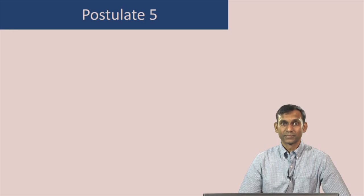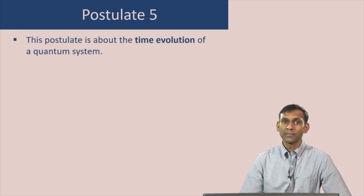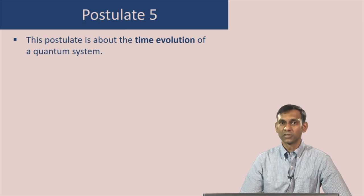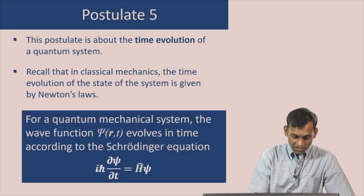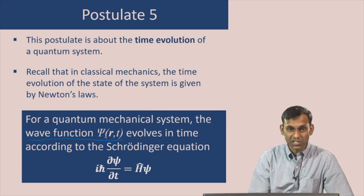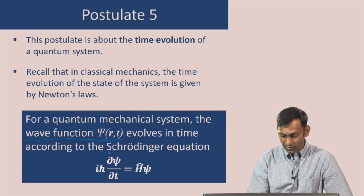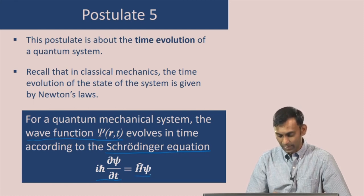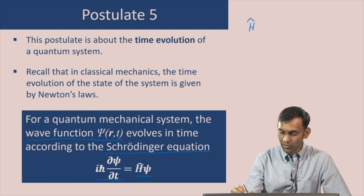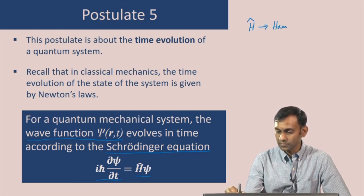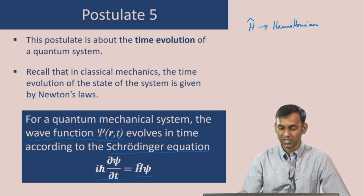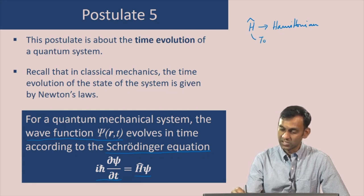Let us now look at postulate 5. This postulate tells us about the time evolution of a quantum system. Recall that in classical mechanics, the time evolution of the position and momentum of a particle was given by Newton's laws. In quantum mechanics, the time evolution of the wave function — which is a function of position and time — is given by the Schrödinger equation: i ℏ ∂ψ/∂t = Ĥψ, where H is the Hamiltonian operator corresponding to the total energy (kinetic plus potential energy).